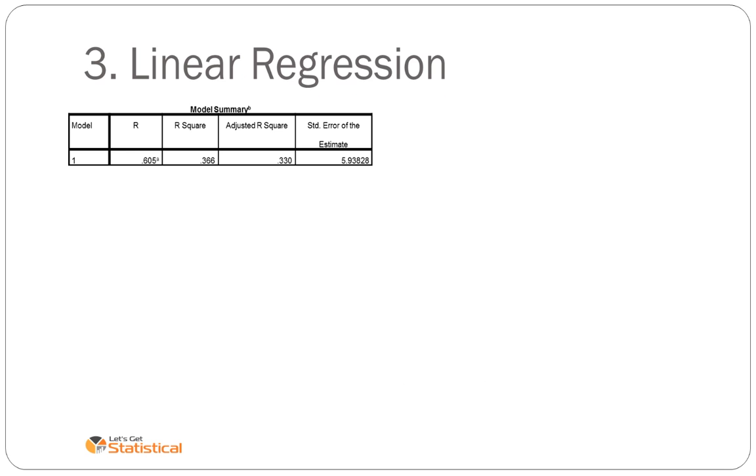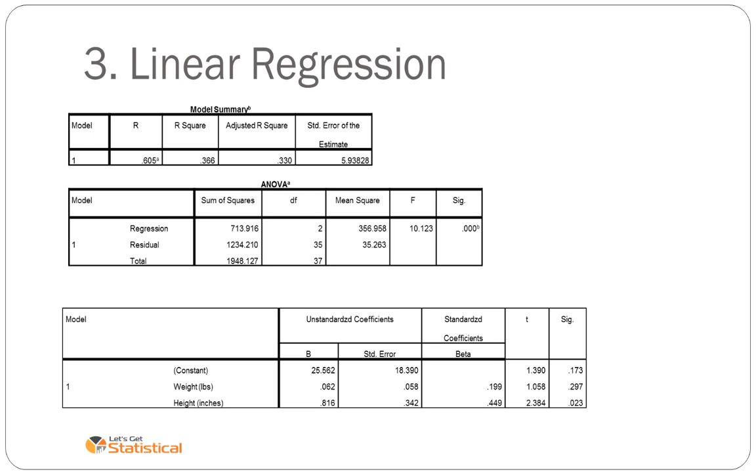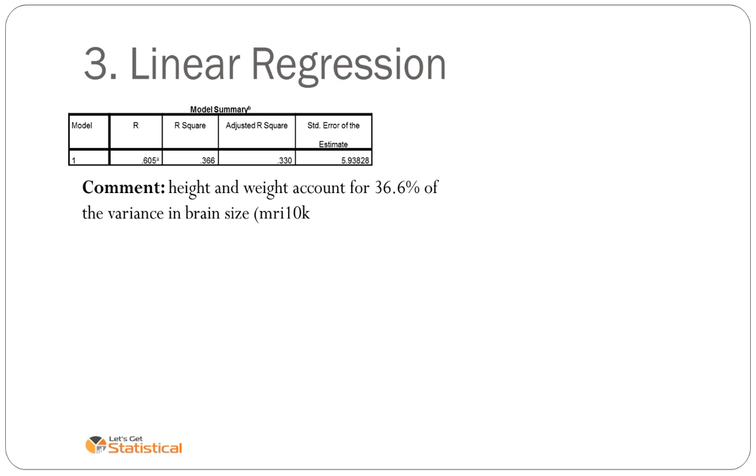We run the linear regression, and we see that our R is 0.6, which is quite good, or 36.6%. We get an ANOVA table and a coefficients table as follows. First of all, we can say that 36.6% of the variance is accounted for by the two IVs, and the conditional standard deviation is 5.94.